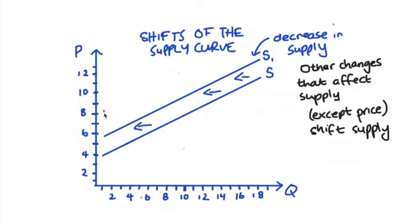For every price in the market, the amount supplied at each one of those prices is now less than it was before. So for instance at a price of eight dollars at the original curve S we used to supply 10 units before the shift but now at S1 we supply six units at that same price.